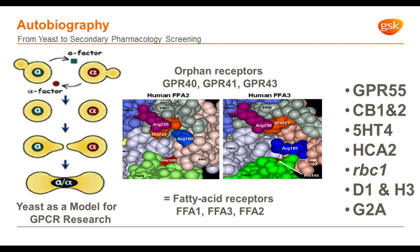My background was all in yeast genetics and molecular biology. When I joined Glaxo, it was as part of an effort to express mammalian GPCRs in yeast. This is possible because yeast have their own endogenous GPCRs involved in the detection of pheromones, as shown on the left-hand side of this slide. This took a couple of years but was eventually successful, and we were able to access yeast strains which made this possible just at the time that the human genome sequence was beginning to be published. Yeast turned out to be a particularly powerful tool to study orphan receptors.